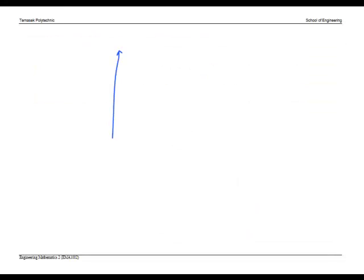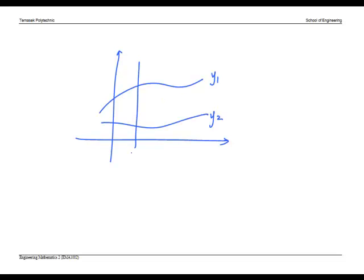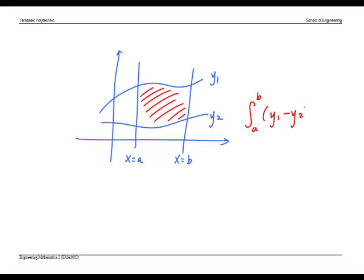Recall that to find the area sandwiched by Y1 on top, Y2 below, and between X equals A and B vertical lines, this area is given by the integral from A to B of Y1 minus Y2 dx. So we need to find the vertical lines X equals A and X equals B, as well as find the expressions for the top curve and the bottom curve.